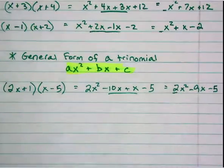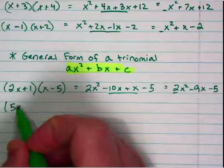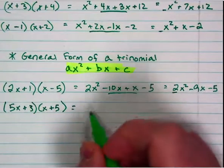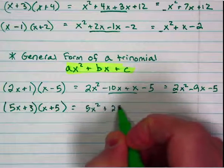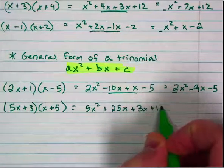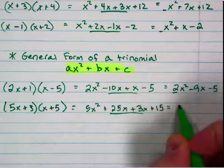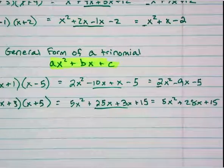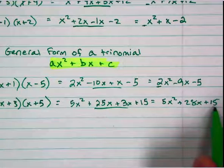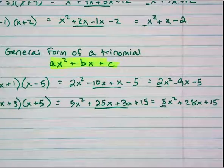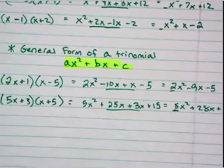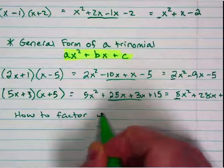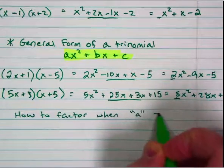Let's see it again. If I do 5x plus 3 times x plus 5, we get 5x squared plus 25x plus 3x plus 15, which combines to 5x squared plus 28x plus 15. Again, this is ax squared plus bx plus c, but now a is not equal to 1. So today is going to be about how to factor when a is not equal to 1.